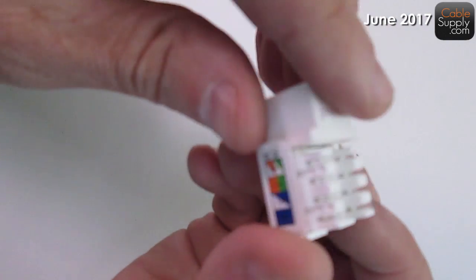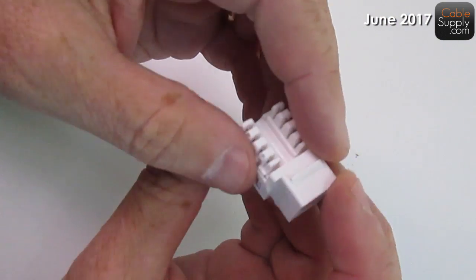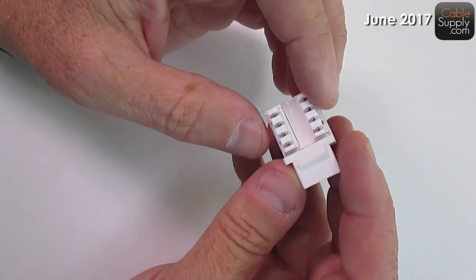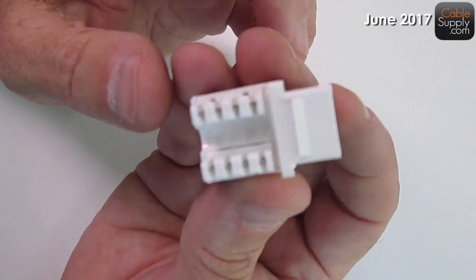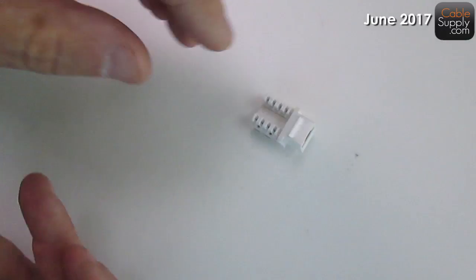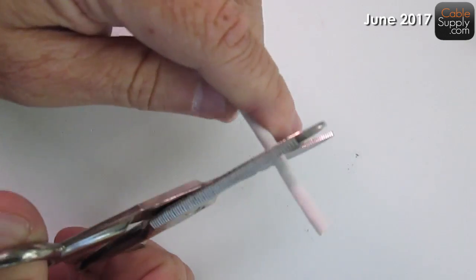And this is the jack we're going to use. This is the one that we're going to punch down or actually it's called punch down today. Back then it used to be called wiring, but today it's called punch down. So, here's my victim cable. We're going to do this quickly.